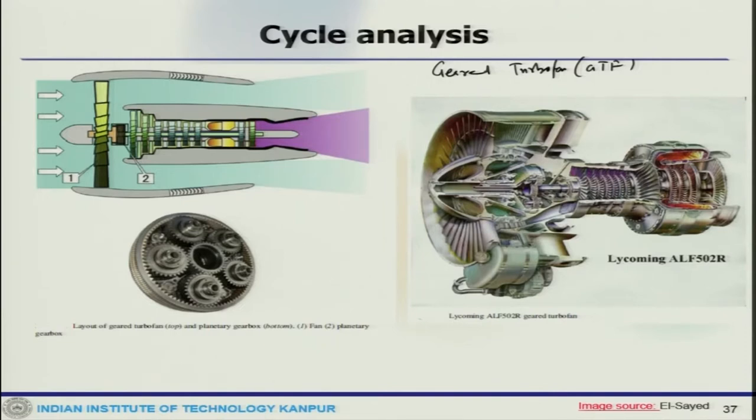There is a reduction gear which is put in between the components, which makes it possible for the fan and the low spool to run at their optimum speed. This is an example of that: the Lycoming ELF 502R engine, produced by Lycoming and then later on Honeywell Aerospace. This kind of gear turbofan has some advantages.